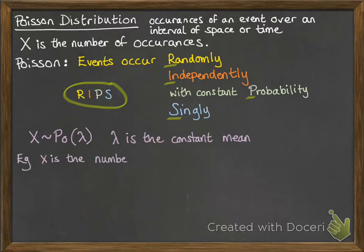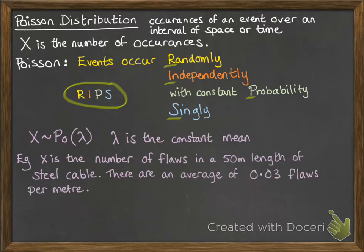So if we look at this example where x is the number of flaws in a 50 meter length of steel cable, there's an average of 0.03 flaws per meter. We can see that it fits RIPS because those flaws occur randomly across the cable. There's nothing that determines where on the cable they happen, they're just random. They occur independent of each other. So a flaw happening in one place doesn't have any effect on the probability of a flaw happening in another place on that cable.